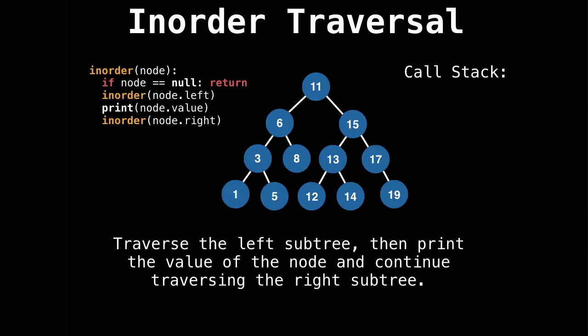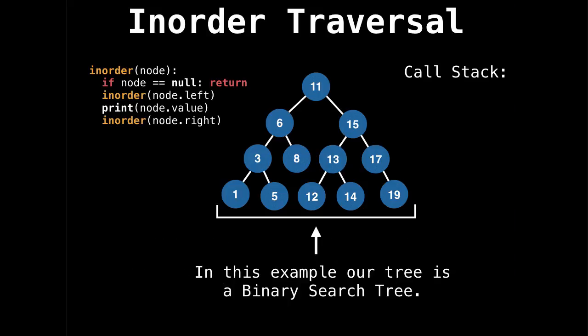Now let's cover inorder traversal. So how inorder traversal works is we traverse the left subtree, then we print the value, and then we traverse the right subtree. And for this example, I'm going to be using a binary search tree and not just a generic binary tree. And you'll see something interesting happens.